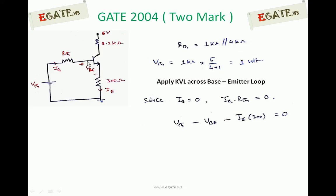From this one you can calculate IE. IE is equal to (1 minus 0.7) divided by 300, so that is 1mA. And since β is very large, IE is nothing but IC. So IC is equal to 1mA.